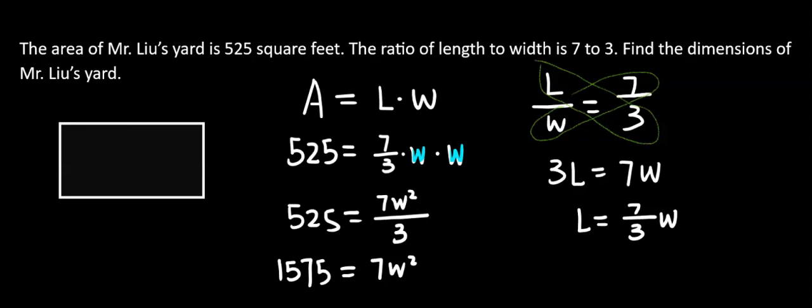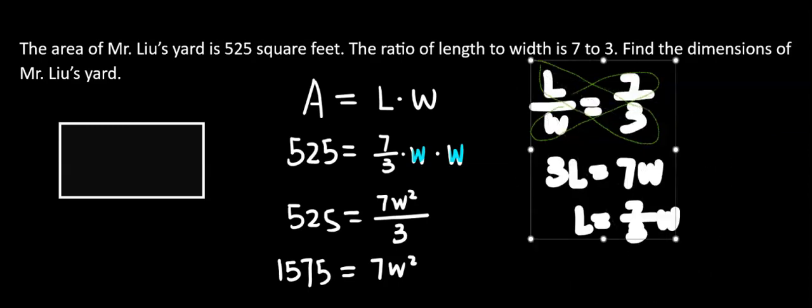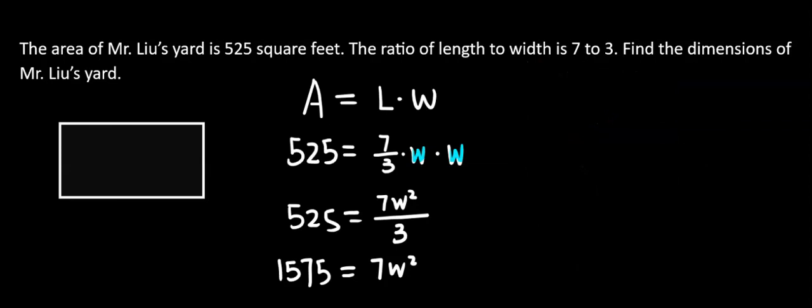I'm going to erase the right side so we have place to write. Now 7, we're going to divide by 7 each side. So we're going to have W squared. W squared is, we have 225.